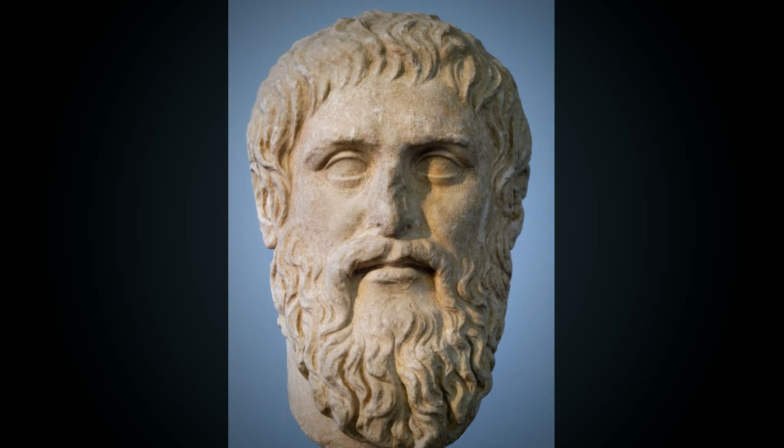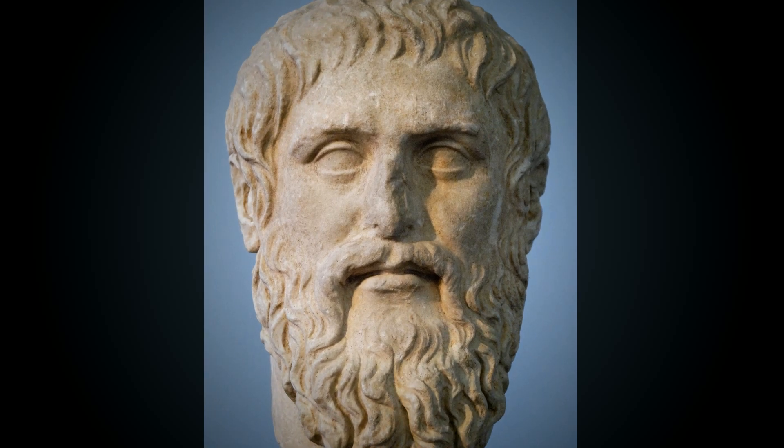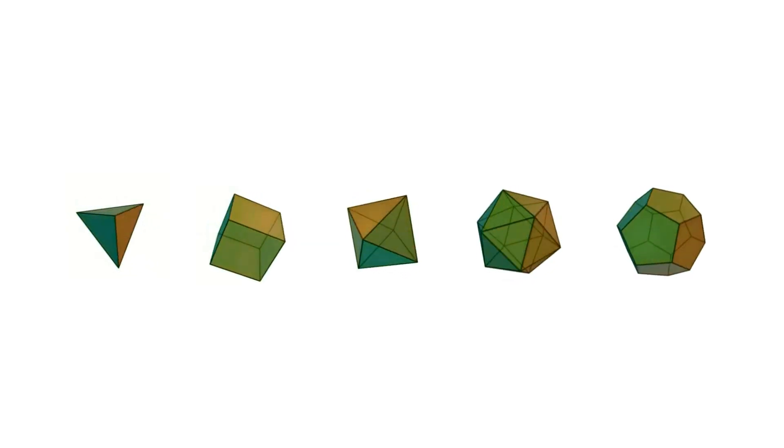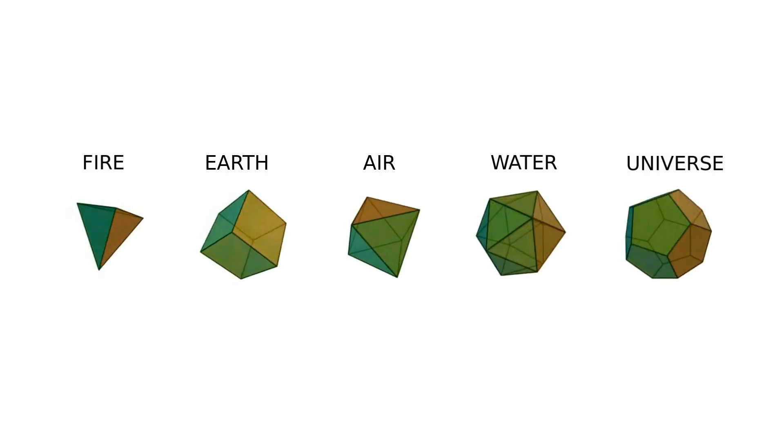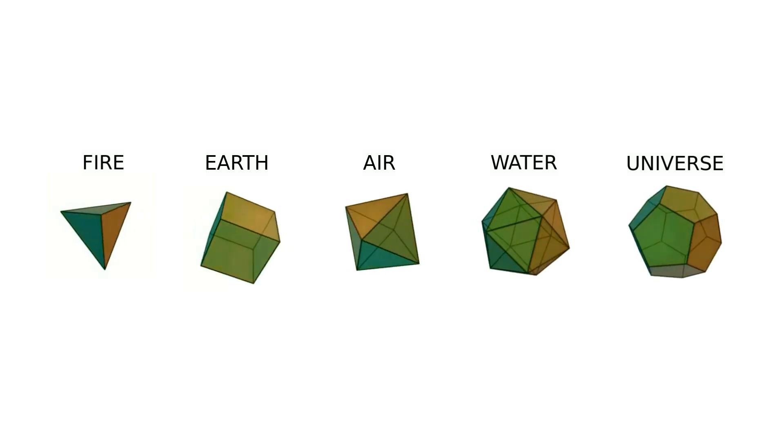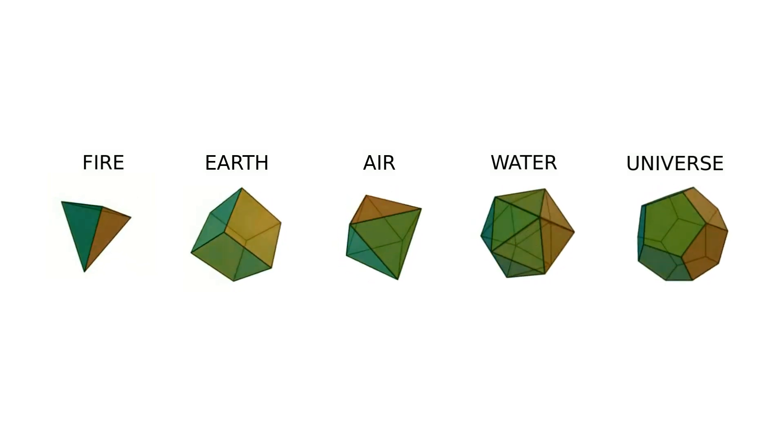The ancient Greek philosopher Plato theorized that the classical elements of the world were made of these regular solids. The five platonic solids were thought to represent the five basic elements: earth, air, fire, water and the universe.